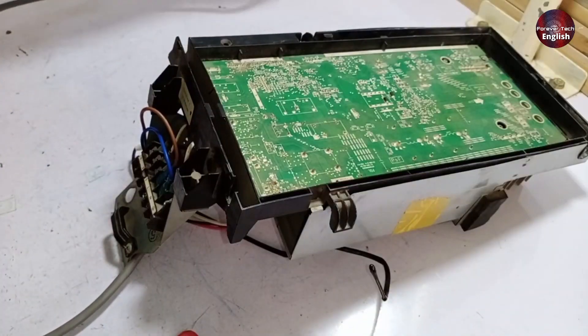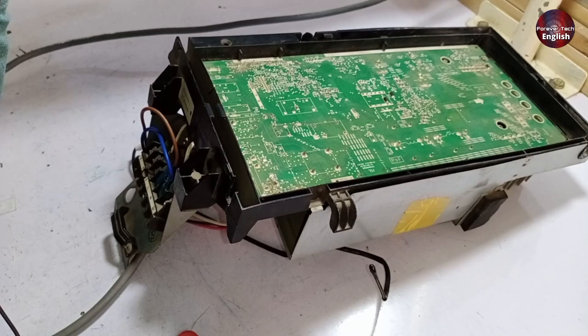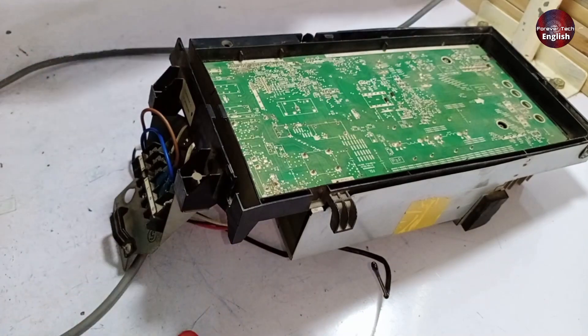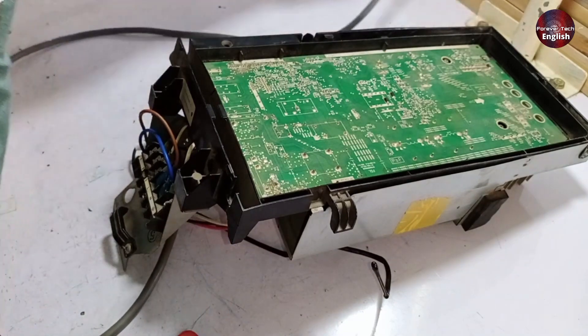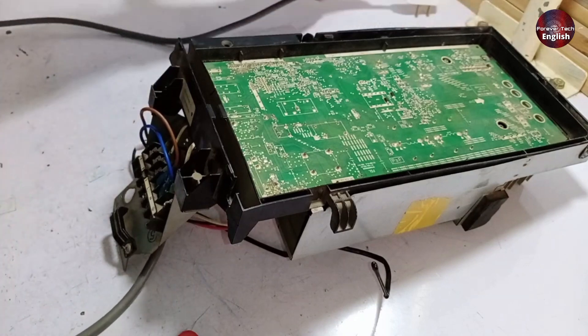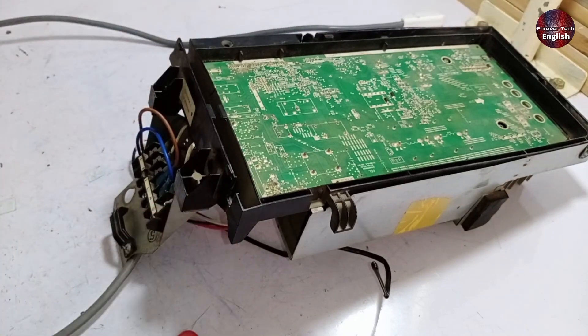Now we will supply electricity and properly check whether it is switching or not. We have supplied electricity, but it seems there is no switching happening. So we have turned off the electricity and will open it up to see what the fault is.